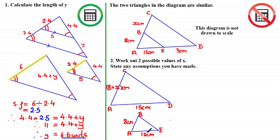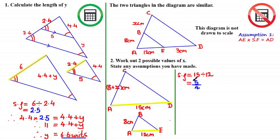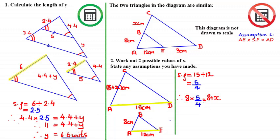Given this diagram, the first assumption we can make is that side AE is similar to AD, meaning AE multiplied by some scale factor equals AD. Working with this assumption, the scale factor is 15 divided by 12, which equals 5 over 4 — left as a fraction since this is a non-calculator question. This implies AB is similar to AC, so multiplying 8 by the scale factor of 5 over 4 gives the length of AC. Forming the equation: 8 times 5 over 4 equals 8 plus X, giving 40 over 4 equals 10, so 10 equals 8 plus X, and X equals 2 centimeters.